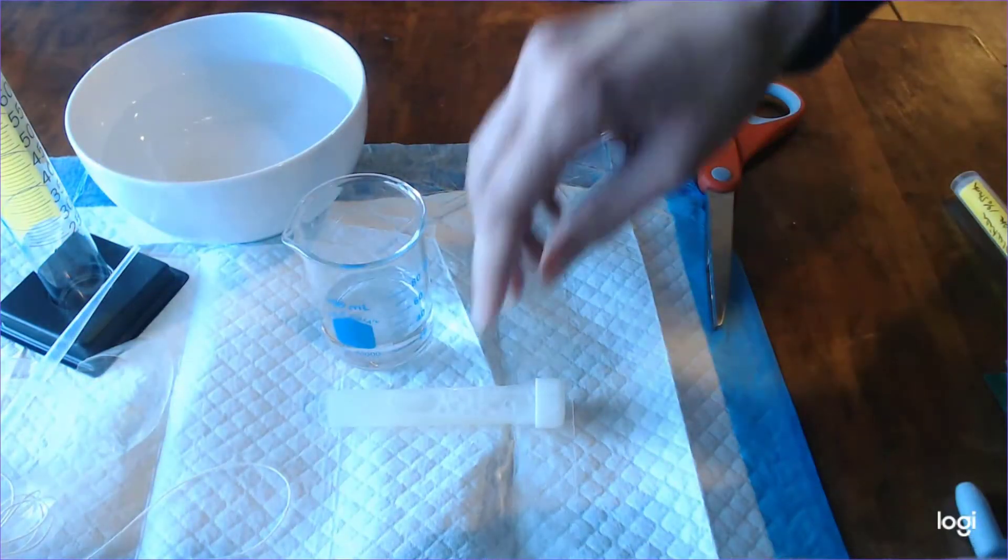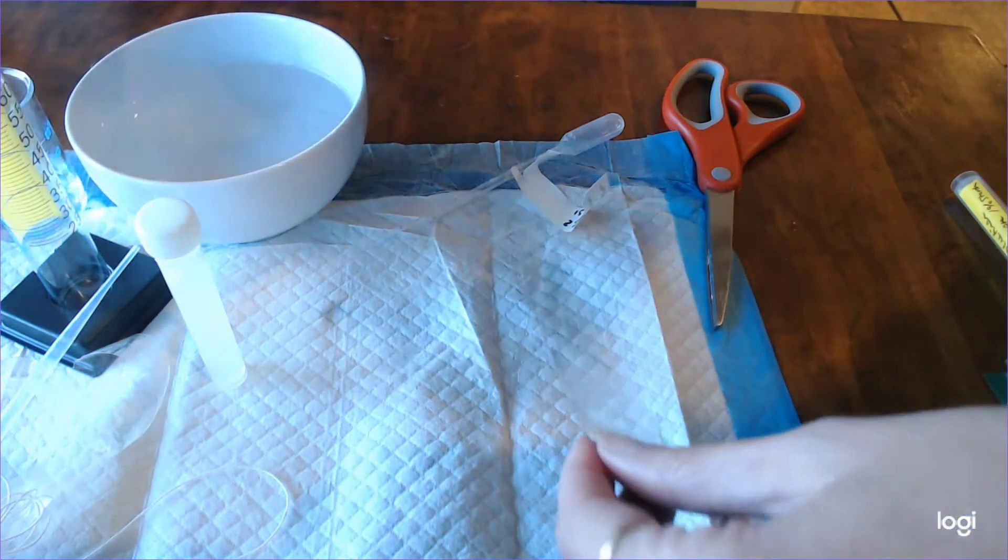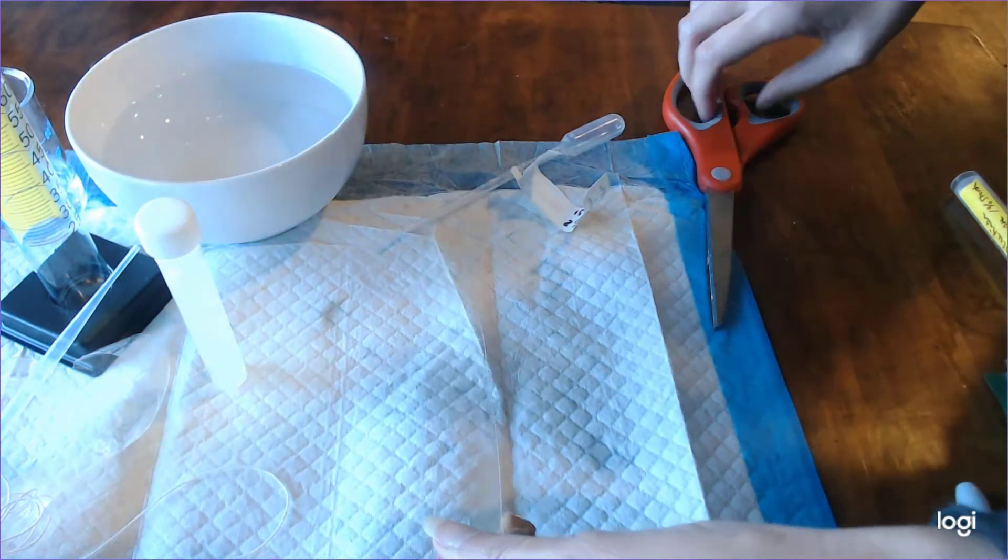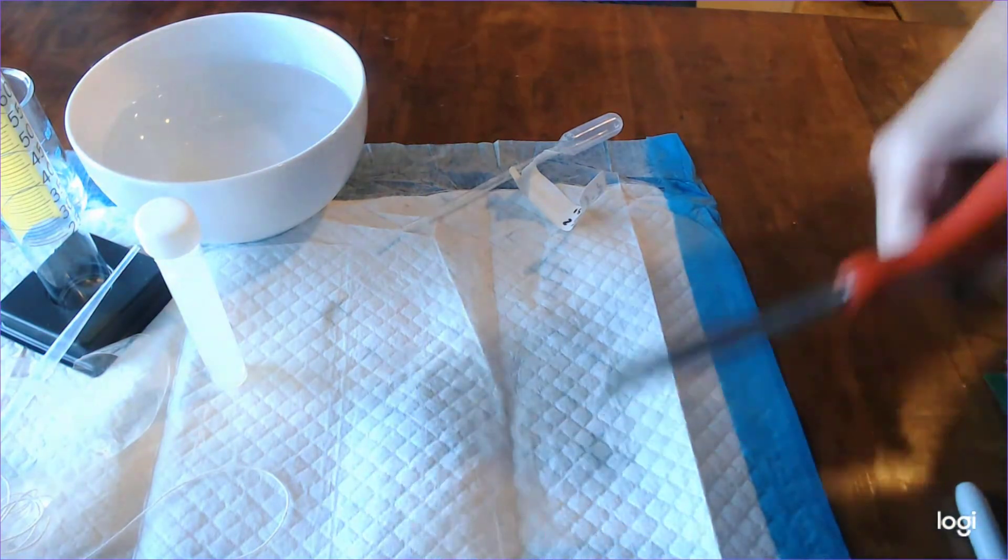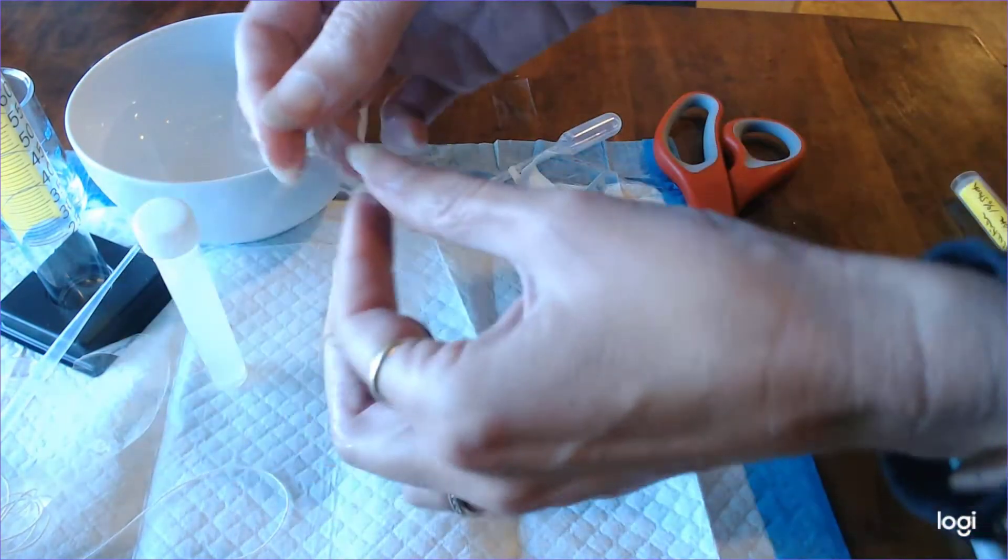So now we're going to go ahead and return to our dialysis tubing which has been soaking for about 15 minutes and I cut an eight inch strip off but I really only need about six inches so I'm just going to cut a little bit more off here. You can keep eight inches if you'd like to start with, you'll be cutting it down later anyway.